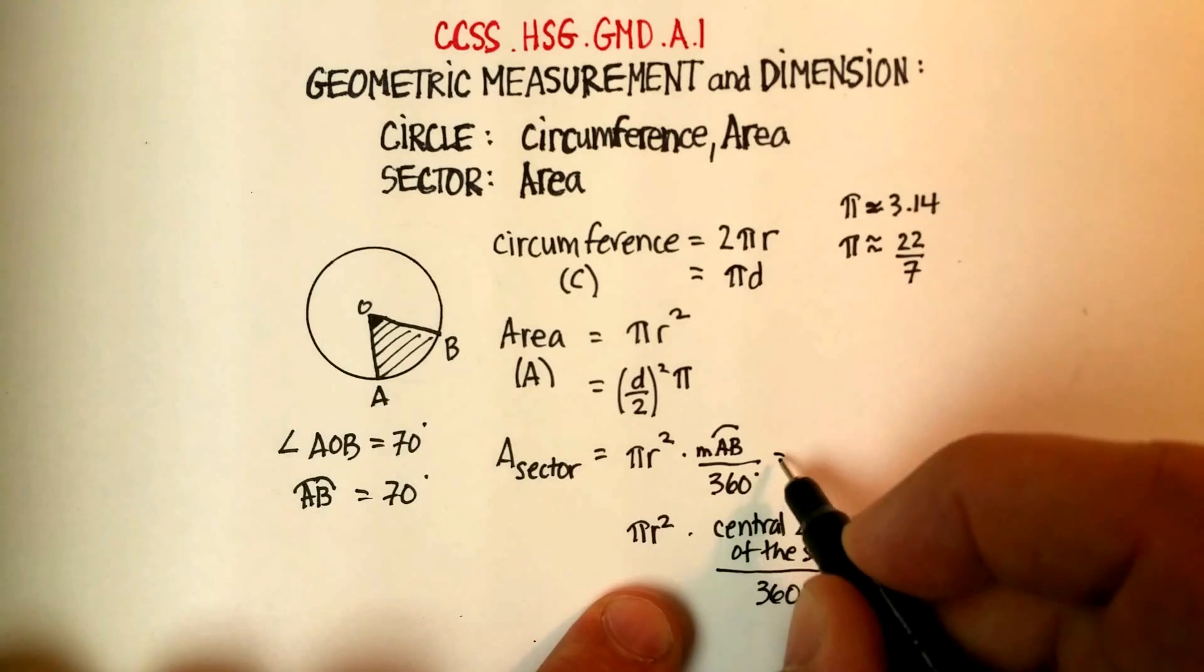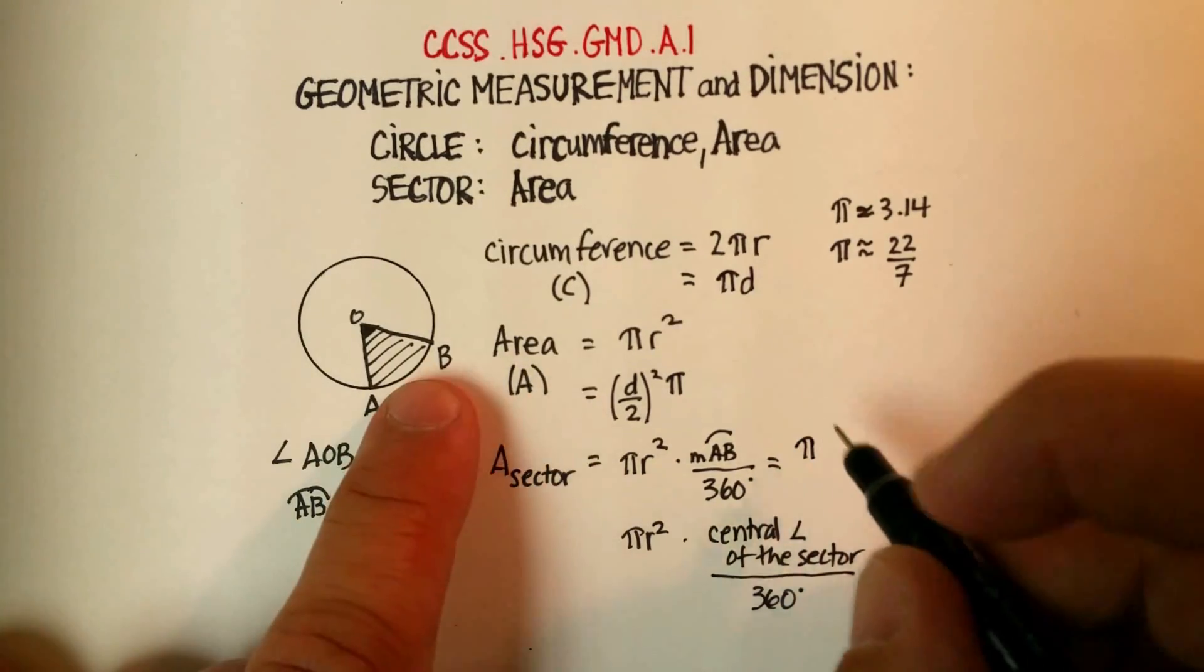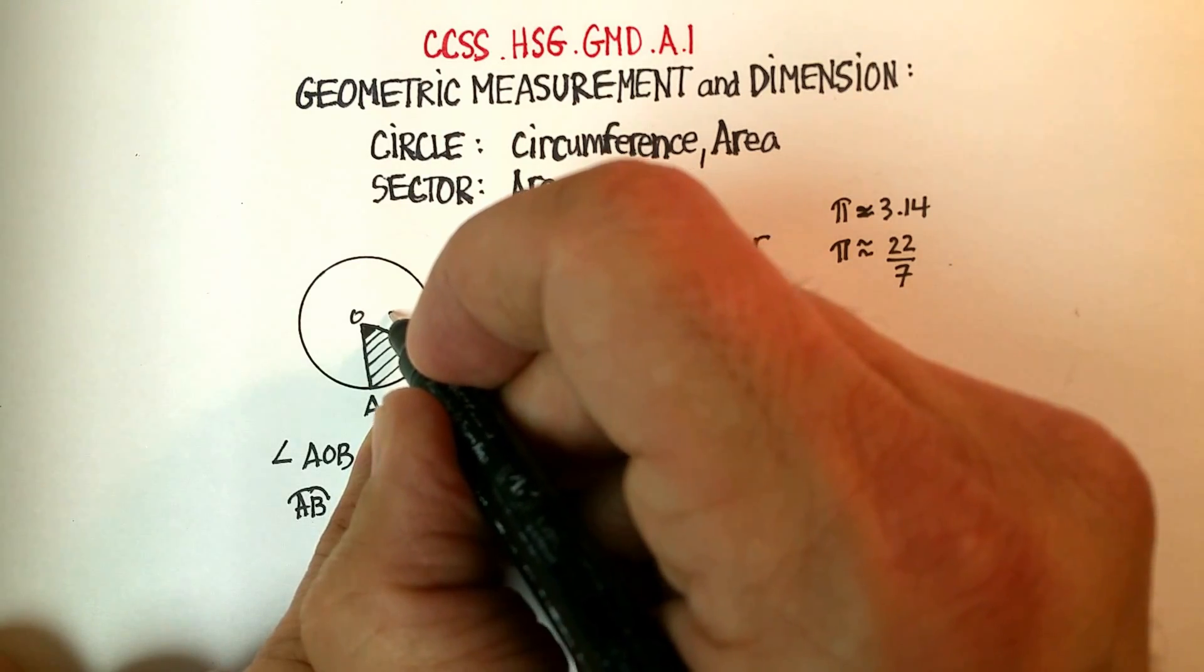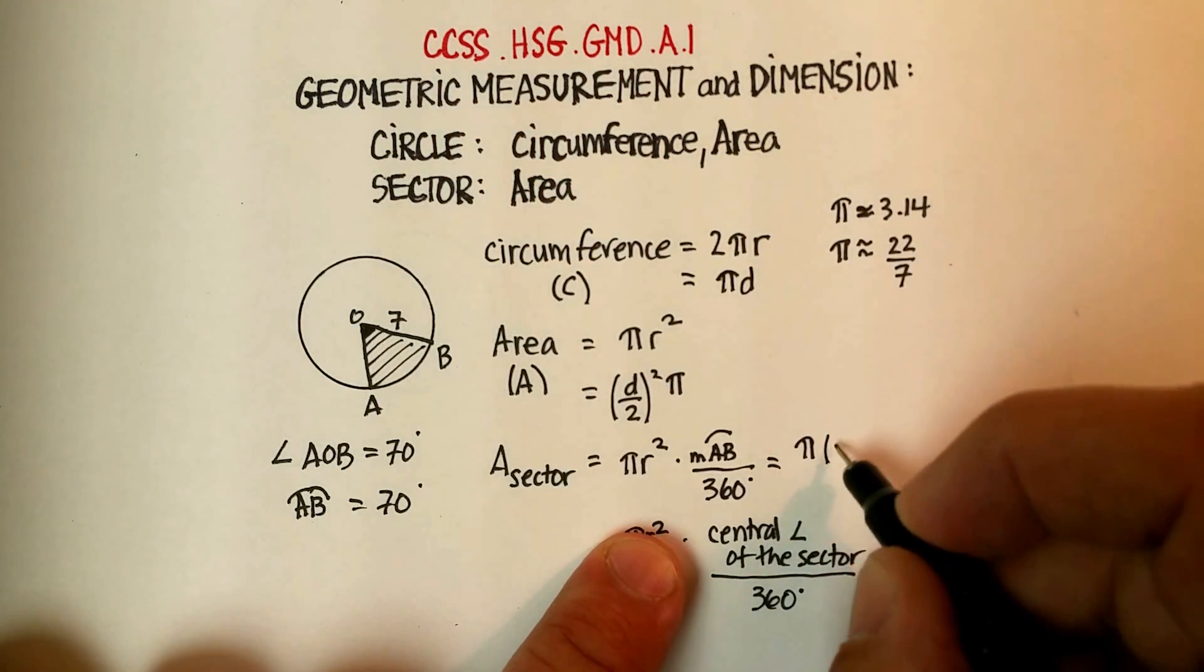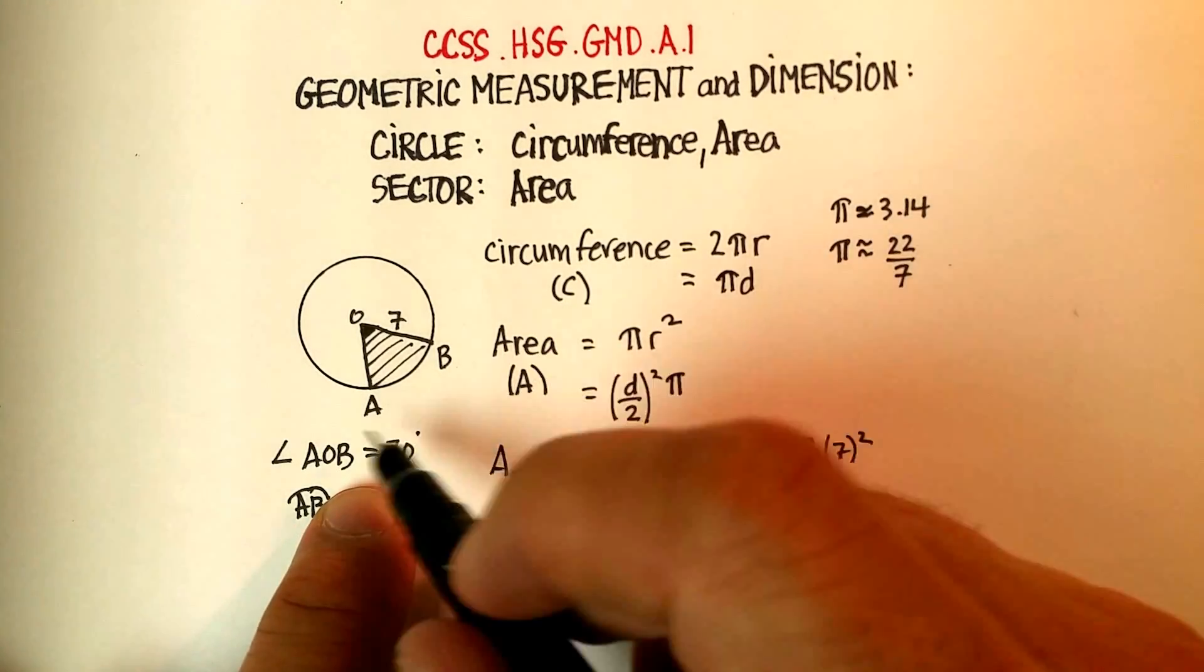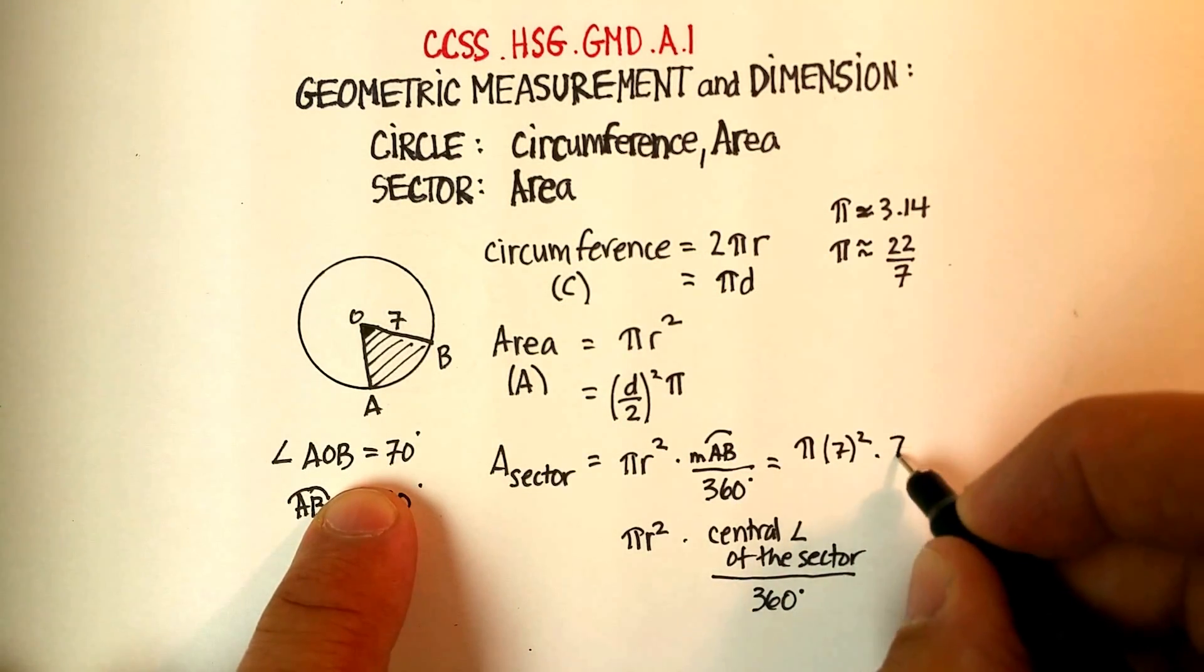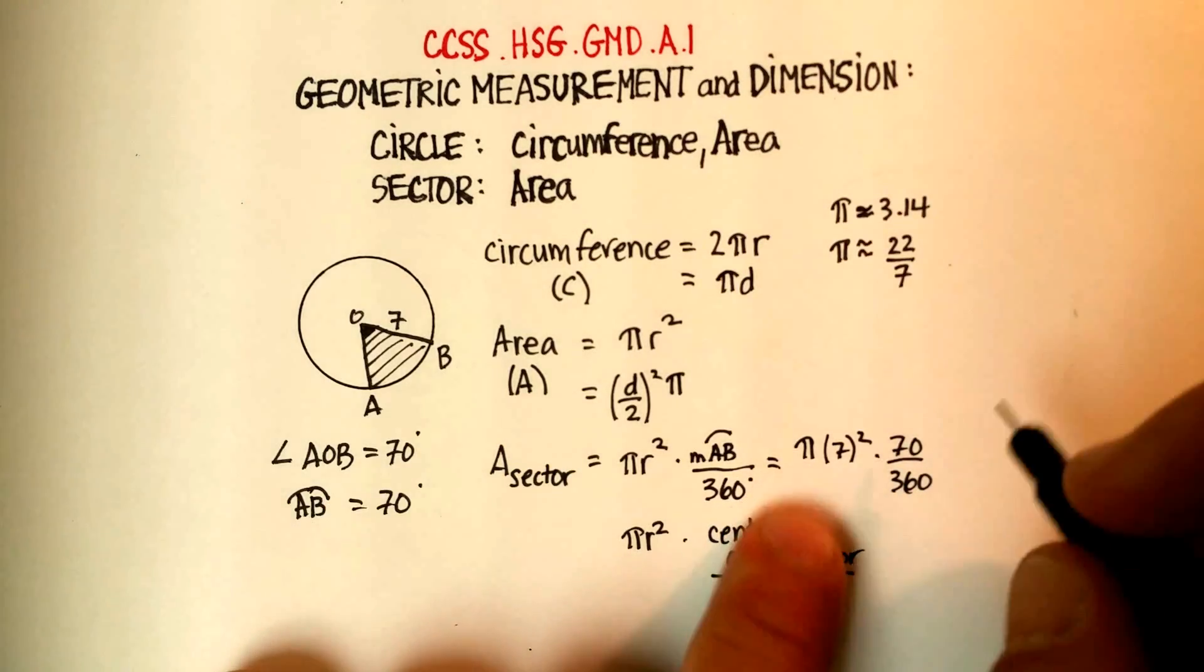I would go over here, put in pi, and let's just pretend that that is, let's just make that seven units. So seven squared times the arc would be 70 divided by 360.